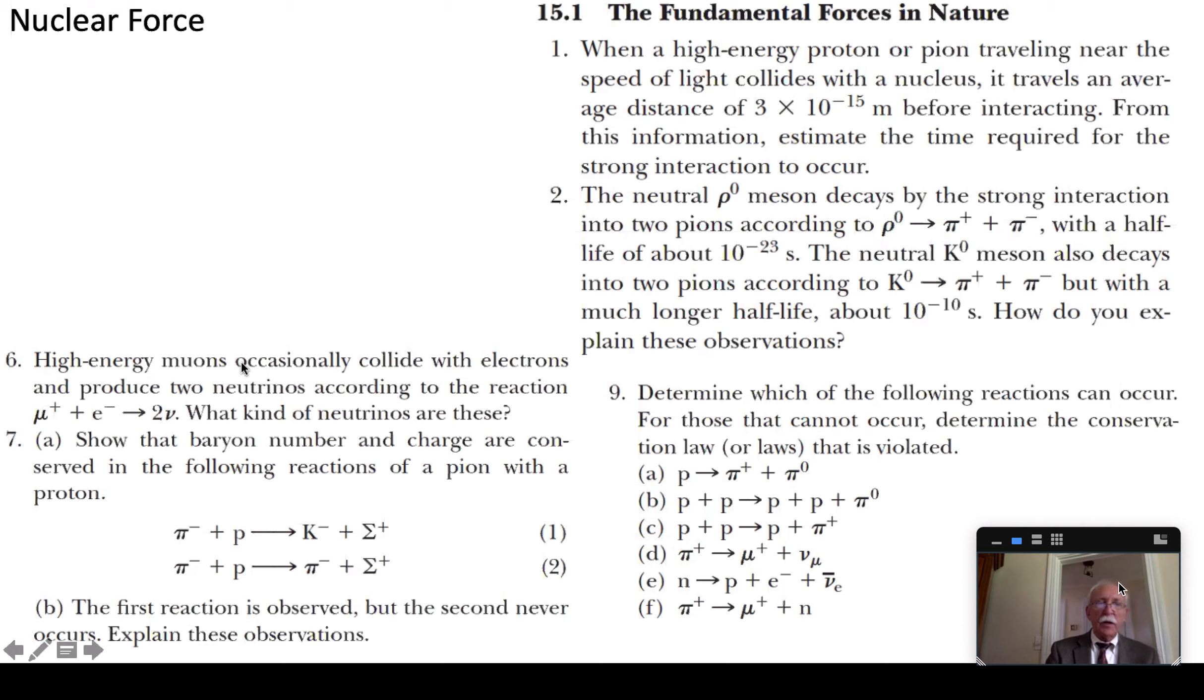Let's take a look at this problem with two muons. Collide and produce, so a mu-minus collides with an electron and produces two neutrinos. What are they? What conservation law do you use? Like the muon numbers? Lepton numbers? Yeah lepton numbers.